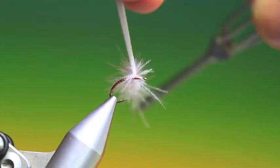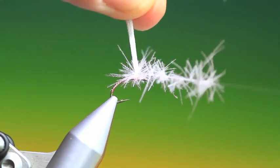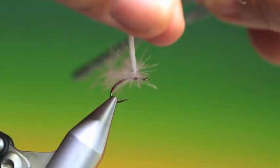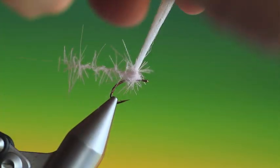So we go up as you would do with a parachute pattern. And once you've done half of the dubbing loop, which is about there, we come back down again.